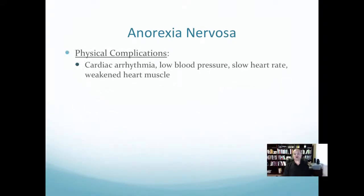Physical complications of anorexia nervosa include cardiac arrhythmia, low blood pressure, slow heart rate, and a weakened heart muscle. Anorexia nervosa at an extreme can cause physical death. In the 1970s and early 80s, the actress and singer Karen Carpenter died of anorexia nervosa — ultimately from heart issues and heart concerns.